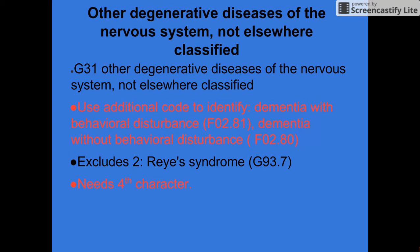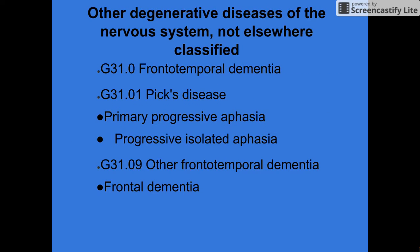Other degenerative diseases of the nervous system not elsewhere classified is coded with G31, and then you need an additional code to identify dementia with or without behavioral disturbance — F02.81 or F02.80. It excludes Reye's syndrome and needs a fourth character. These are some examples.